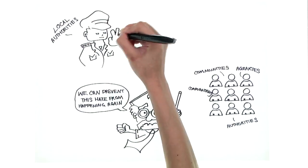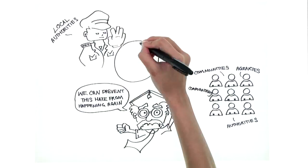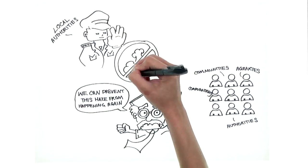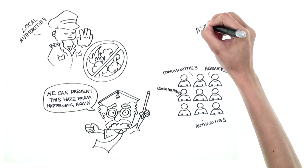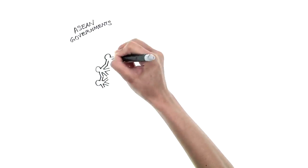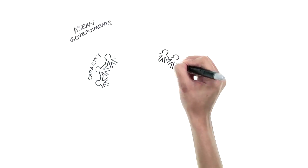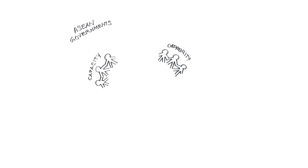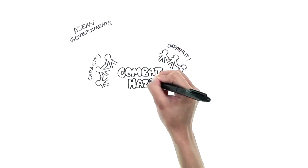For example, local authorities in Indonesia need to more effectively enforce bans on illegal burning activities. These ASEAN governments are coming together to develop strategic measures that will strengthen the region's capacity and capability to address and combat transboundary haze pollution.